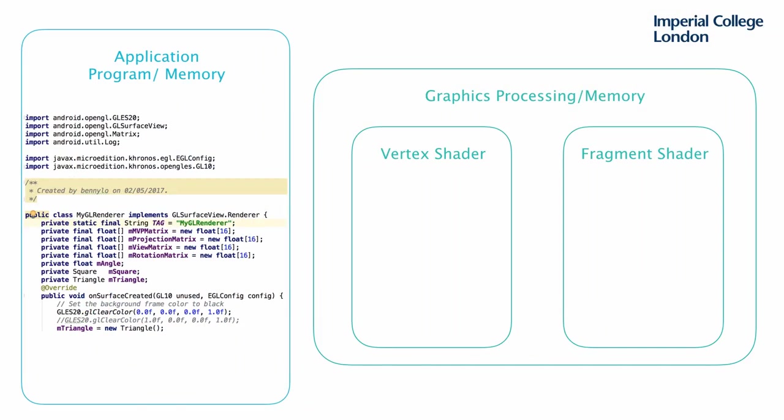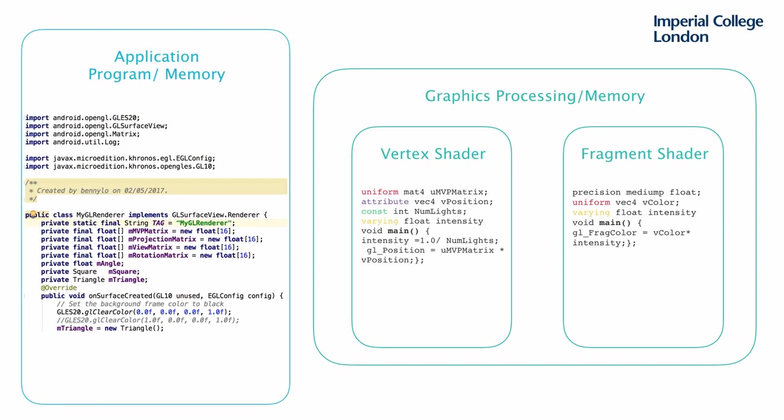So far I've talked about how the application program interfaces with the GPU. Let's talk about how the GPU works in more detail. As I mentioned before, graphics processing can be viewed as if there are two shaders or processors in the GPU: the vertex shader and the fragment shader. To program the GPU, you will need to write a program for the vertex shader and another program for the fragment shader.